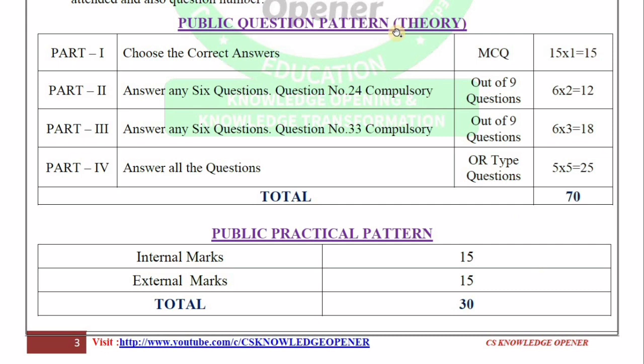In this class, there are 4 parts. Part 1 is Multiple Choice Questions — 15 questions, choose the correct answer. In Part 2, there are 6 questions, and the compulsory question count is 24.